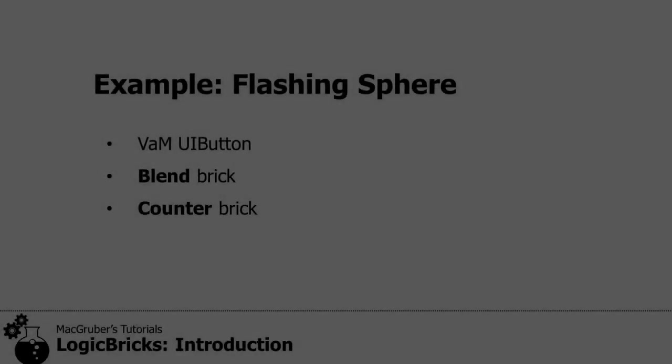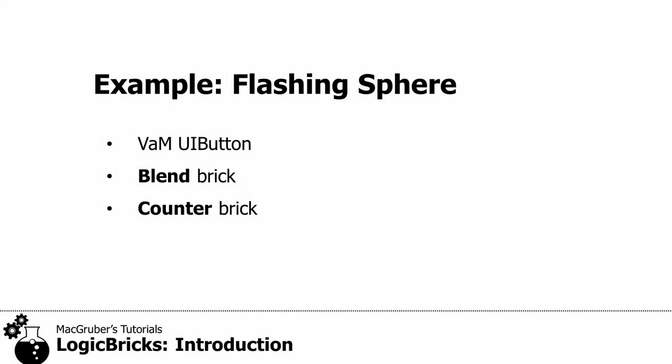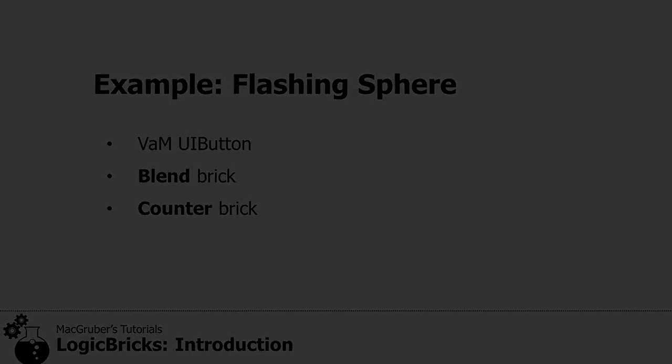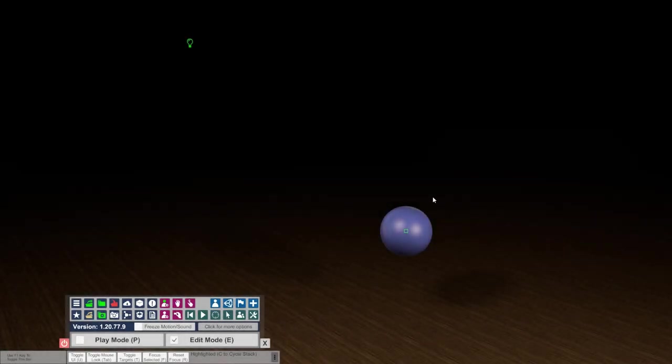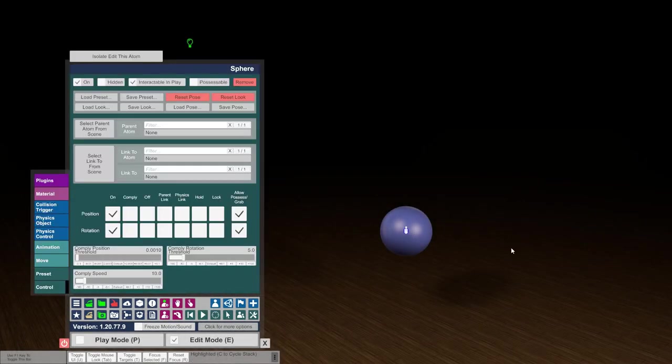For this first example we want to start simple and build a sphere that flashes after we press a button a couple of times. We'll need a UI button, and we'll also use a Blend brick and a Counter brick. I've prepared a little scene here that already has a sphere.